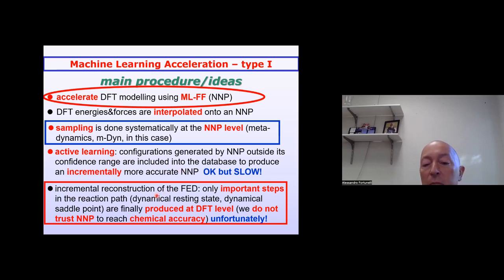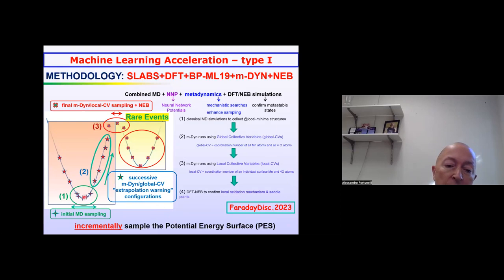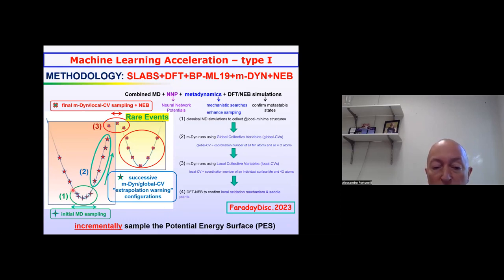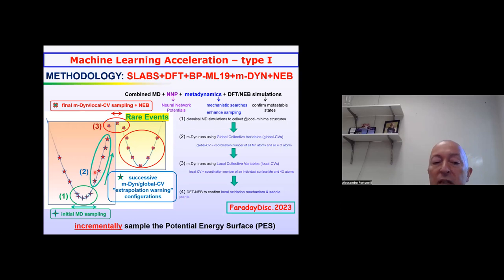This double-check is called active learning. You produce configurations via sampling with the neural network potential, then check whether your configurations are within or outside the confidence range of your neural network potential. If they're outside, you include them in a larger database to produce an incrementally more accurate neural network potential. This works, but the two problems are the slowness and the accuracy. You can sample, for example, the bottom of the potential surface with molecular dynamics, parametrize the force field with increasing accuracy, then use metadynamics to force the system out of local minima. To do this for a specific process, you need at least 15–20 iterations.